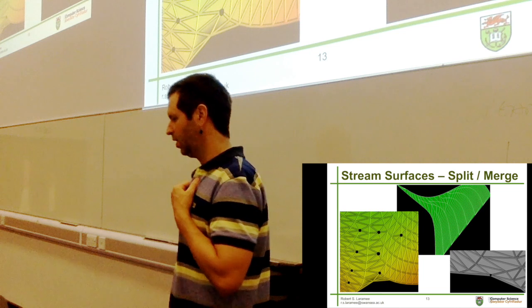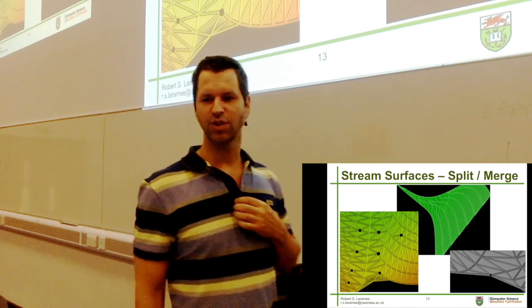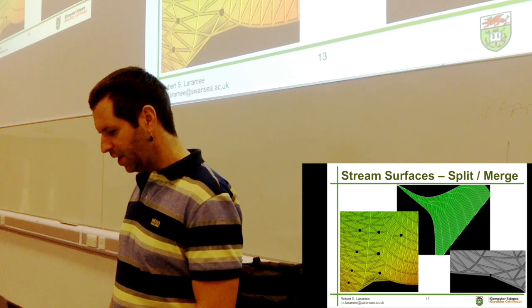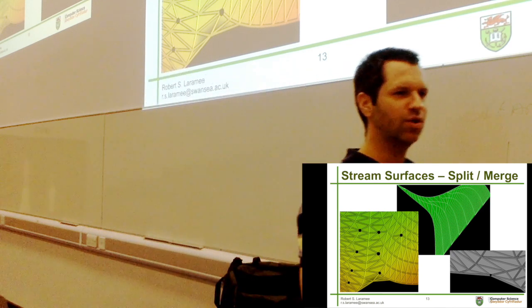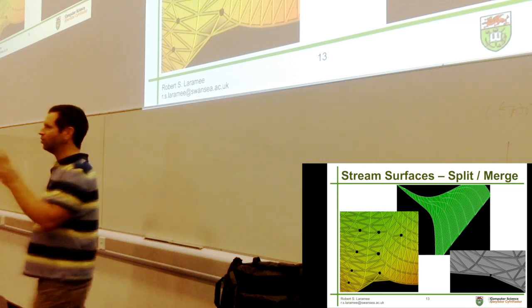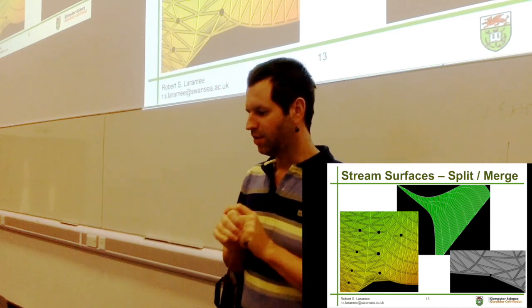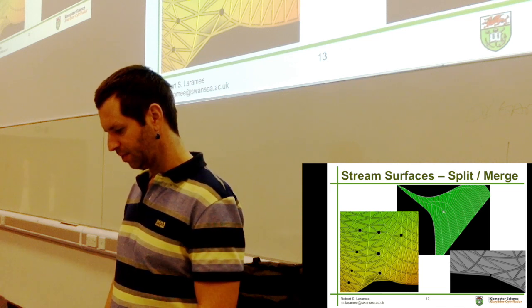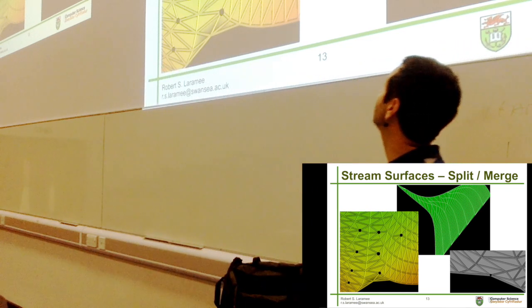Here are some stream surfaces composed of triangles. The first stream surface implementations were composed of triangles. You can imagine a seeding curve and then integrating streamlines along the flow — the flow often diverges. When the flow diverges, you have to insert new streamlines so the gap between them doesn't get too great. Then you have to introduce a triangulation between the streamlines. The triangulation as flow diverges and converges is very complicated.